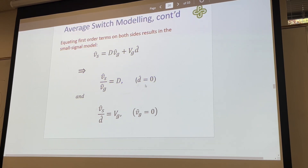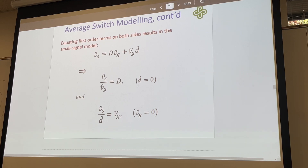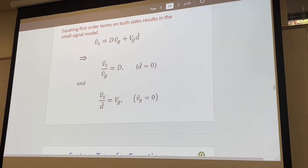Now we're going to break it into the first order terms. We have our small variation to our square wave — it is equivalent to the variation in the input times our steady state duty cycle, plus our steady state input times small variations in that duty cycle. We can equate these where, when there are no variations in the duty cycle, the small variations in the output over the small variations in the input will equal our steady state duty cycle. Likewise, the small variation in the duty cycle over the small variation output equals our steady state input voltage, assuming no variations in the input.